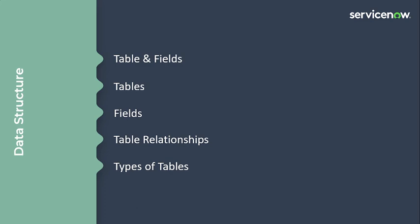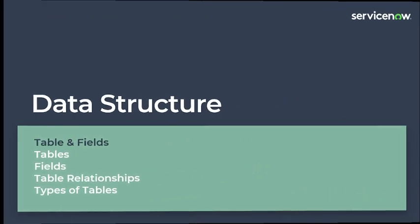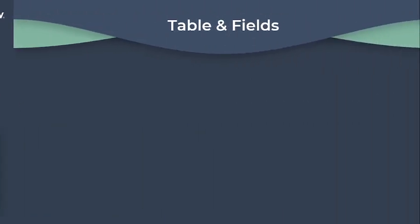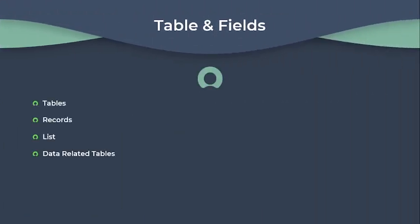So let's start with tables and fields. ServiceNow manages data through a structured database system consisting of tables, records, fields and lists. Tables act as a container for storing records, each record containing various fields that hold specific information. Lists provide a user-friendly way to view records within a table.